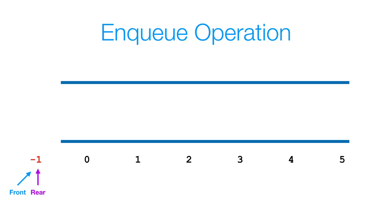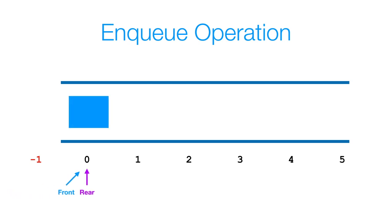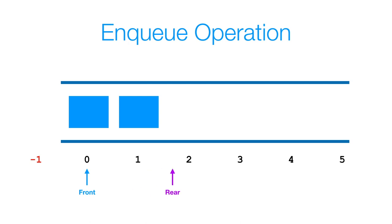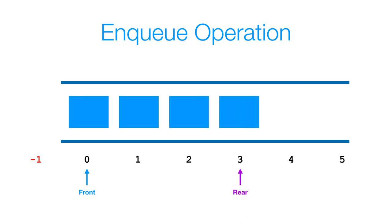Initially, I'm going to set my front and rear to negative one to represent that I have no elements currently in my queue. At the point where I add my very first element, I'm going to set my front and rear both to index zero, since we only have one element. When I add another element, I only increment my rear by a single index, and I keep doing so until I've added all the elements I need.